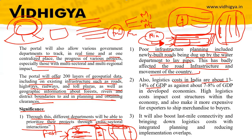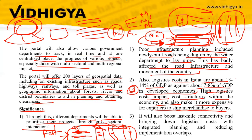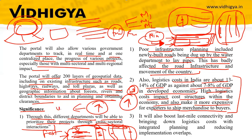Logistics cost in India is about 13 to 14 percent of GDP, as against 7 to 8 percent of GDP in developed economies — almost double. High logistics cost impacts the cost structure within the economy and makes it more expensive for exporters to ship merchandise. Because of high logistics costs, the price of products increases, making them uncompetitive in the market.